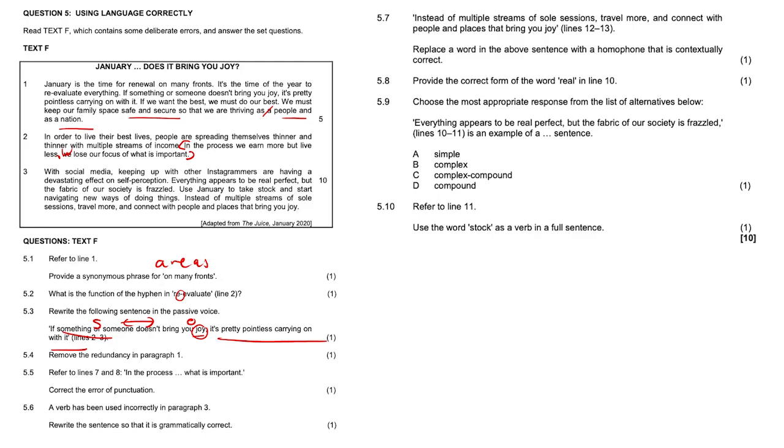5.6, a verb has been used incorrectly in paragraph three. Rewrite the sentence so that it is grammatically correct. Feel free to pause the video, try it on your own. Actually, a concord error with social media, keeping up with other Instagrammers, are having, is having a devastating effect. It's plural there, so that needs to become is. So basically, from are to is.